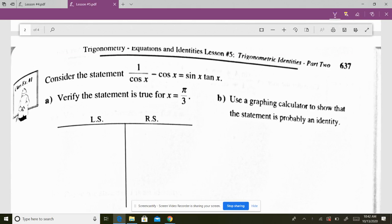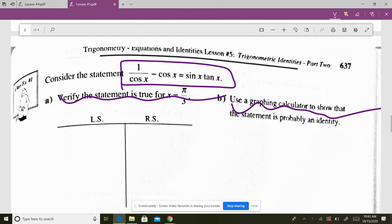Cos x minus cos x is equal to sin x tan x. I need to show that this is a true statement. Somebody gave you that and they said, is this true?